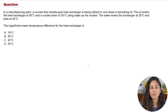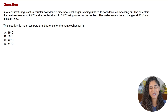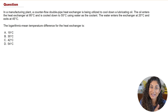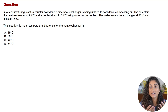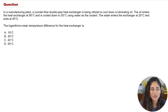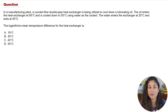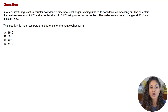We want to determine the log mean temperature difference for the heat exchanger. In a heat exchanger, the temperature difference between the two fluids — the hot and the cold — varies from inlet to outlet. To account for this variation more accurately than a simple average, we calculate the log mean temperature difference. Once we determine it, we can solve for the rate of heat transfer.